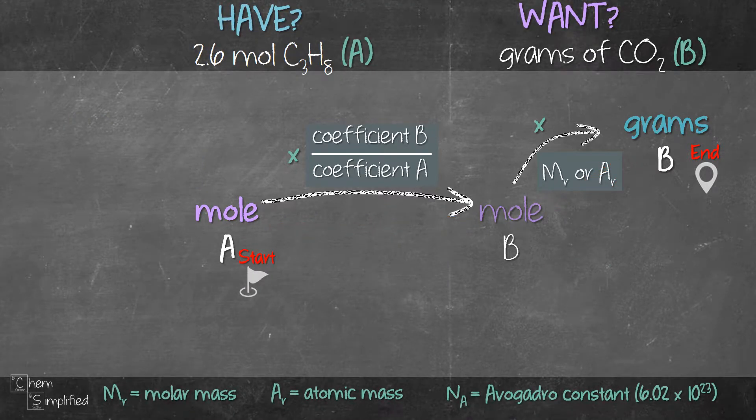Since the question involves two substances and we need the coefficient ratio for B over A, we need to first make sure that we have a balanced equation.